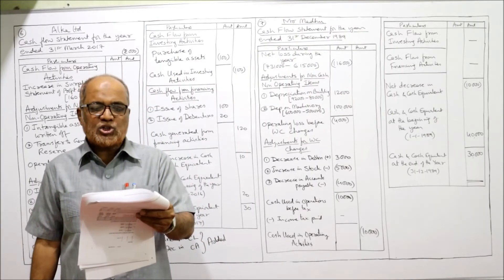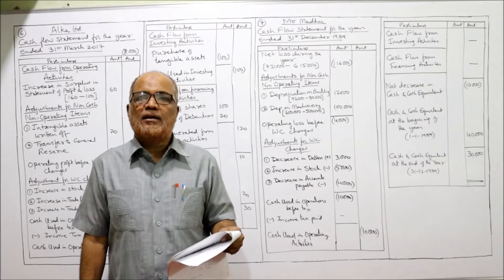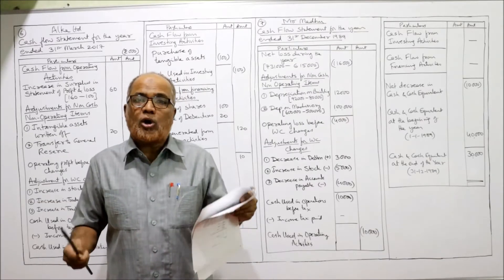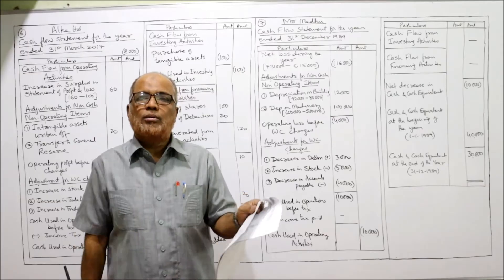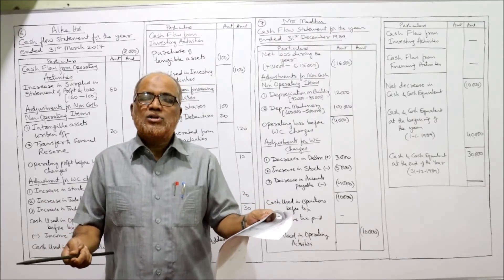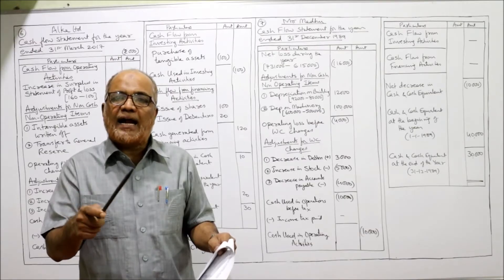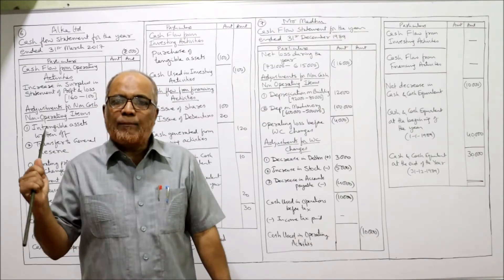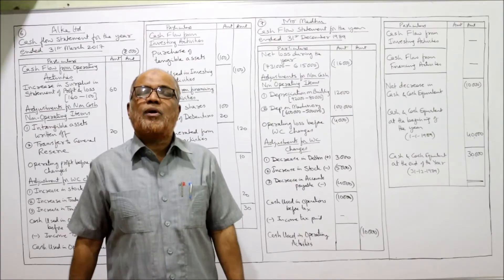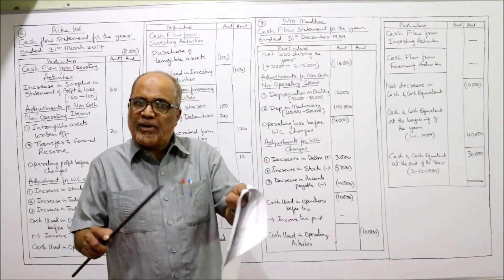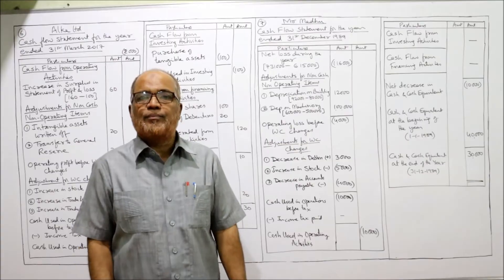Now I'm reading out problem number seven: the statement of financial position of Mr. Madhu is given. This is the first problem of a sole trader — not a company. Previous problems were companies/corporations with share capital. Here it is the balance sheet of Mr. Madhu, a natural person — a sole trading concern. The key difference: in a sole trading concern, profits are adjusted in capital, whereas in a company the profit is kept separately in a profit and loss account.